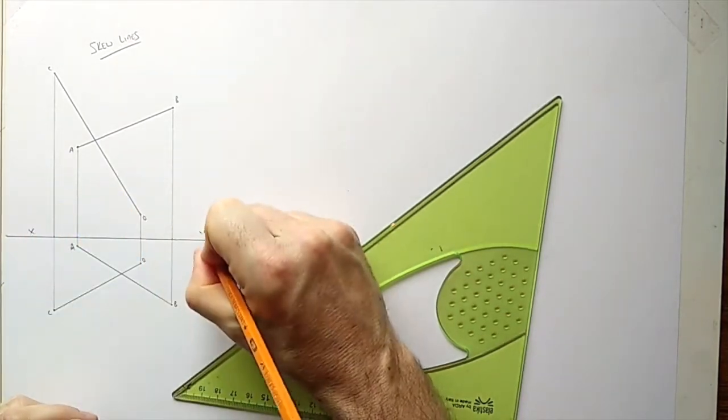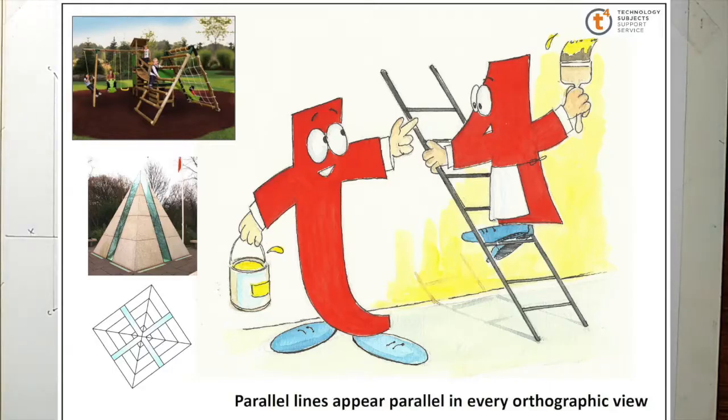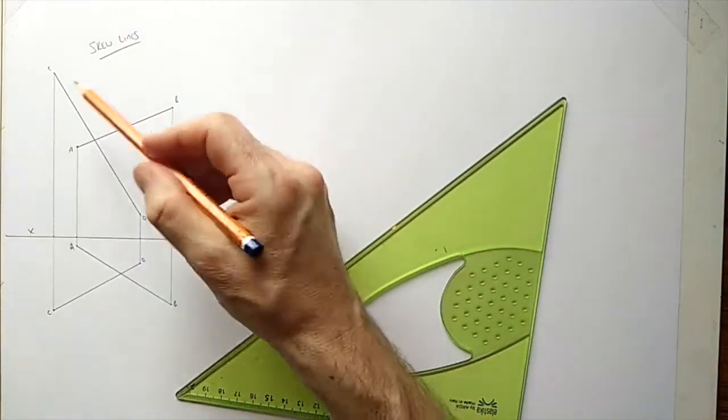Now the geometric principle we use to solve these is that if a line is parallel in one view, it's parallel in all the other views. Of course skew lines aren't parallel because by definition a skew line is a line that doesn't intersect or isn't parallel.